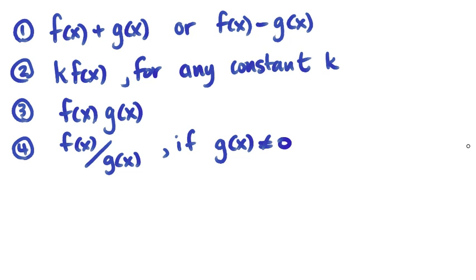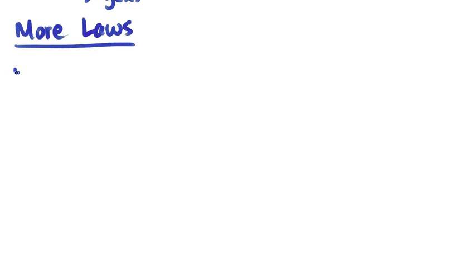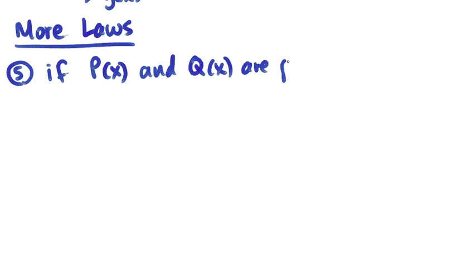There are also some additional laws above these basic ones. The fifth one being if you've got a couple of polynomials, p of x and q of x are polynomial, then two things happen.